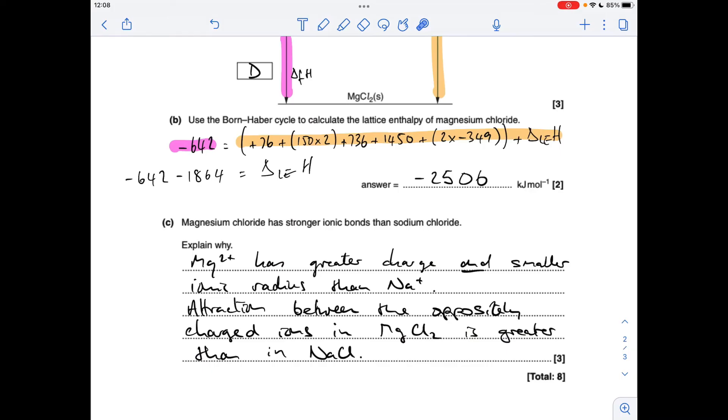So the final part, we've got to explain why magnesium chloride's got stronger ionic bonds than sodium chloride. It's all down to the ionic charge and the ionic radius. So magnesium 2 plus has got a greater charge and a smaller ionic radius than the Na plus ion.